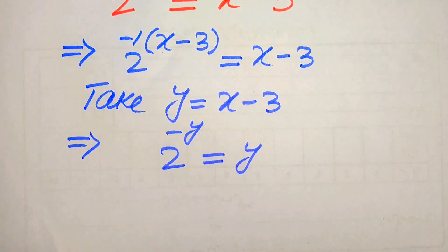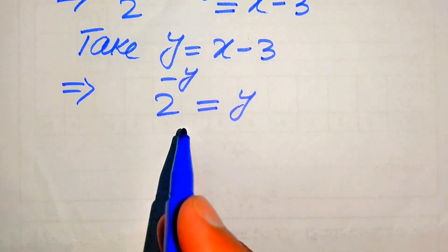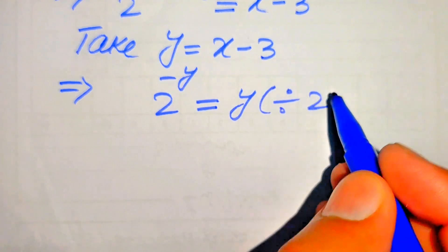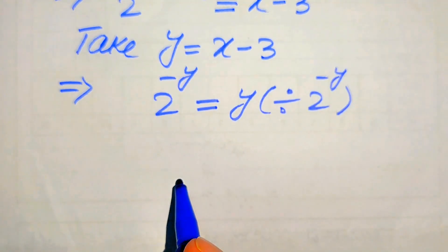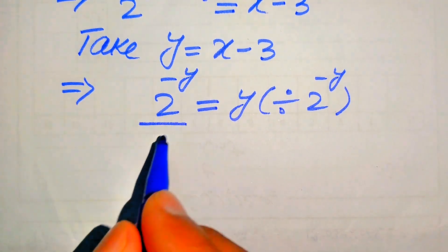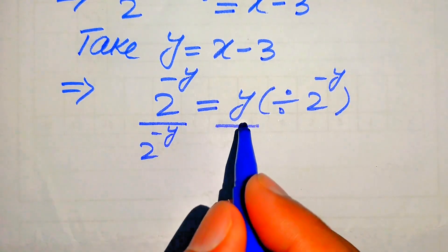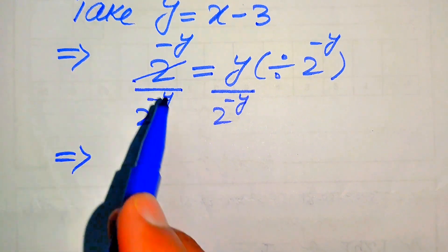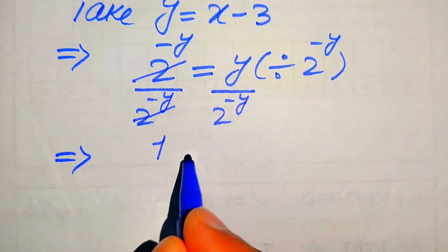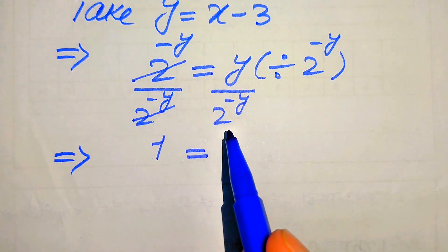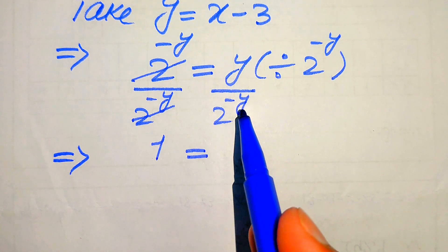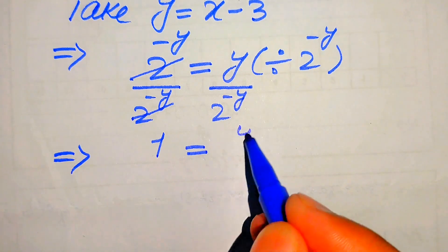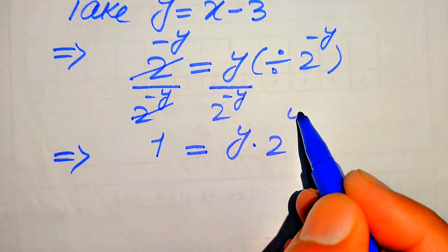This converts the exponential form into a simplified form. We need to move the exponential term to the right-hand side by dividing both sides by 2 to the power of minus y. After cancellation, we get 1 equals y times 2 to the power of y, because moving 2 to the power of minus y to the other side makes the exponent positive.